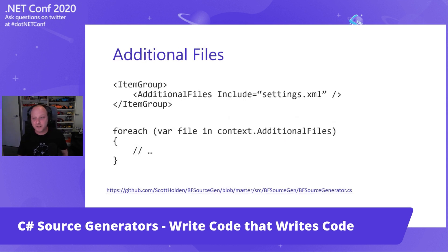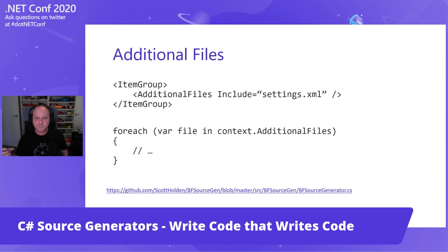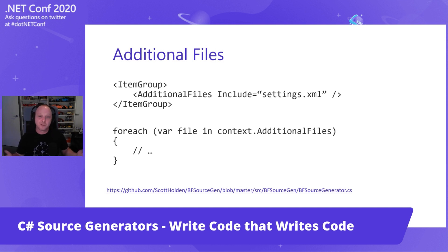Accessing additional files — you can access whatever is in the project that is added via an 'additional files' element. A friend of mine created a transpiler that takes a language that doesn't support .NET: you add the source code for that language as additional files, he wrote a source generator that transpiles it to C#, Roslyn then compiles that C# into a DLL, and all of a sudden we have a new .NET language. You can do all sorts of wacky things with additional files.